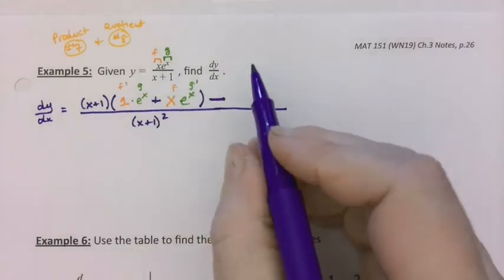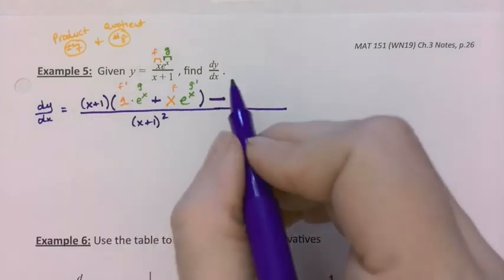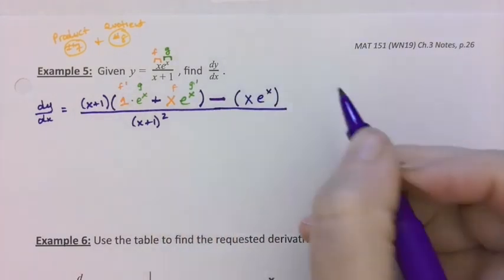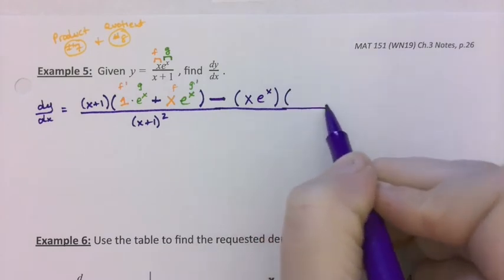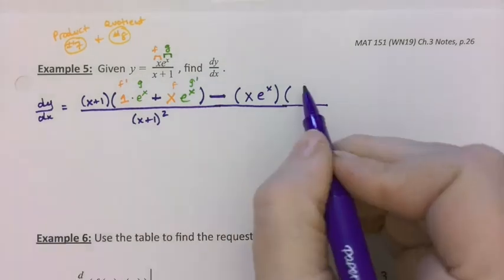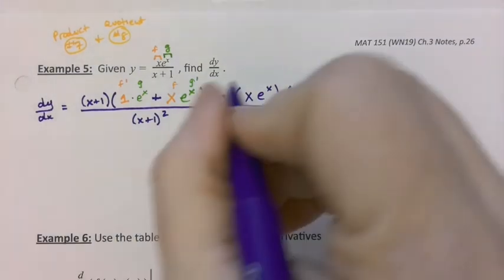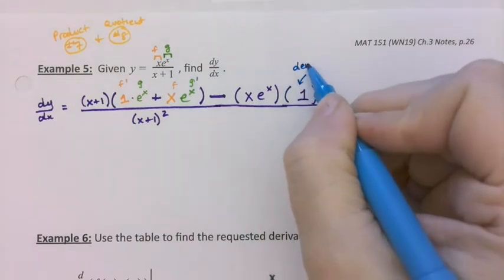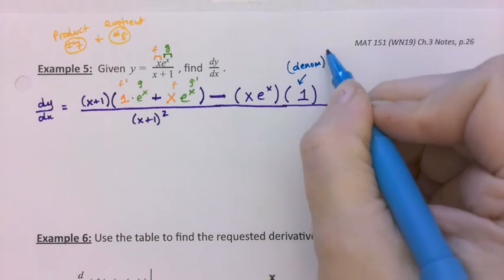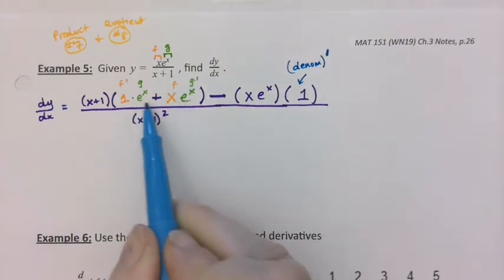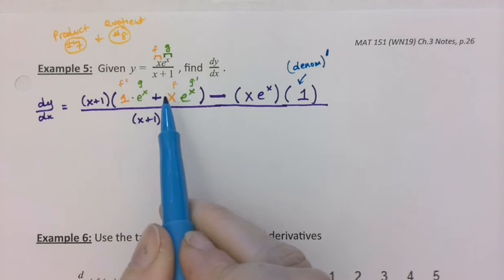Minus — now leave the numerator alone. So you just write x e to the x, there's the numerator, times the derivative of the denominator, but the derivative of the denominator is 1. So that is the denominator prime — the derivative of the denominator. And this is the numerator prime — the derivative of the numerator.